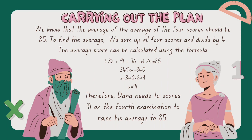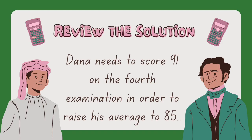Therefore, Dana needs to score 91 on the fourth examination to raise his average to 85. The fourth step is to review the solution: Dana needs to score 91 on the fourth examination in order to raise his average to 85.